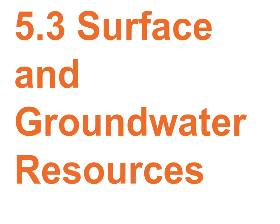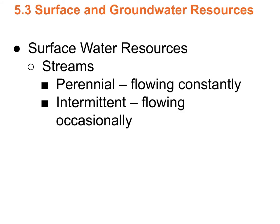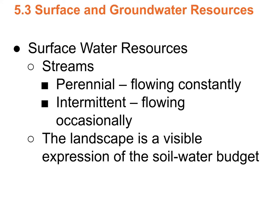Let's talk about surface and groundwater resources. Surface water is water in lakes and reservoirs. Groundwater is water you get at with a well. Streams have names depending on how long they flow: perennial streams flow all year, intermittent streams flow occasionally. A nice way to think of the soil water budget is that the landscape around you is a visible expression of it — if there's a permanent deficit, you can't have streams or lakes. Texas, for example, has one natural lake, which tells you a lot about its water budget.